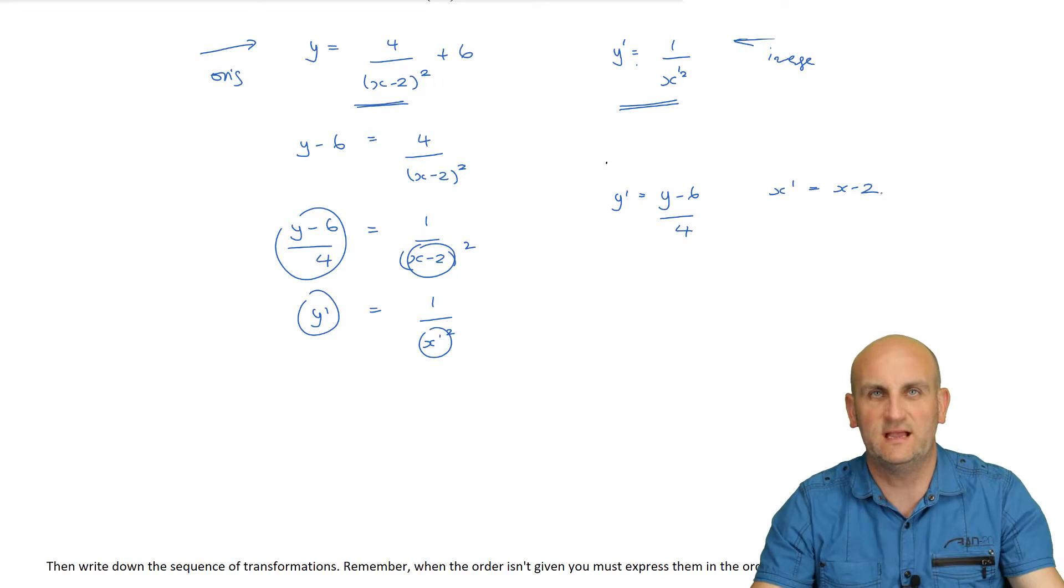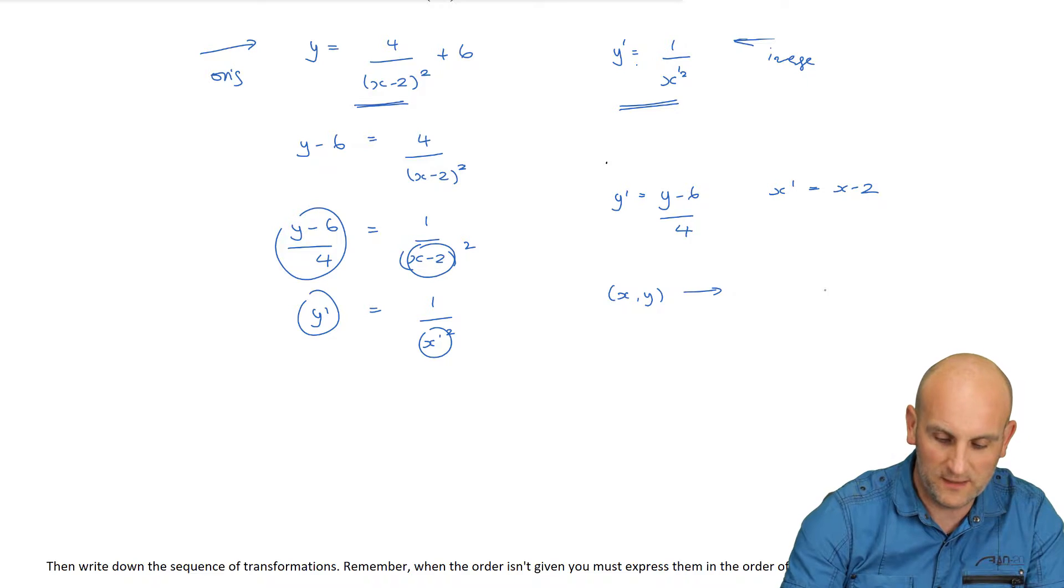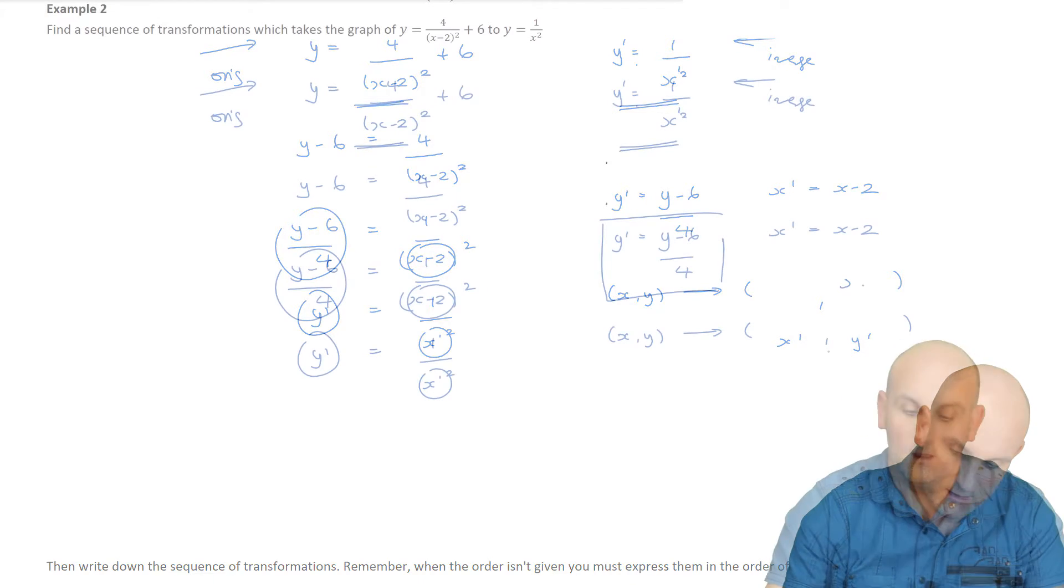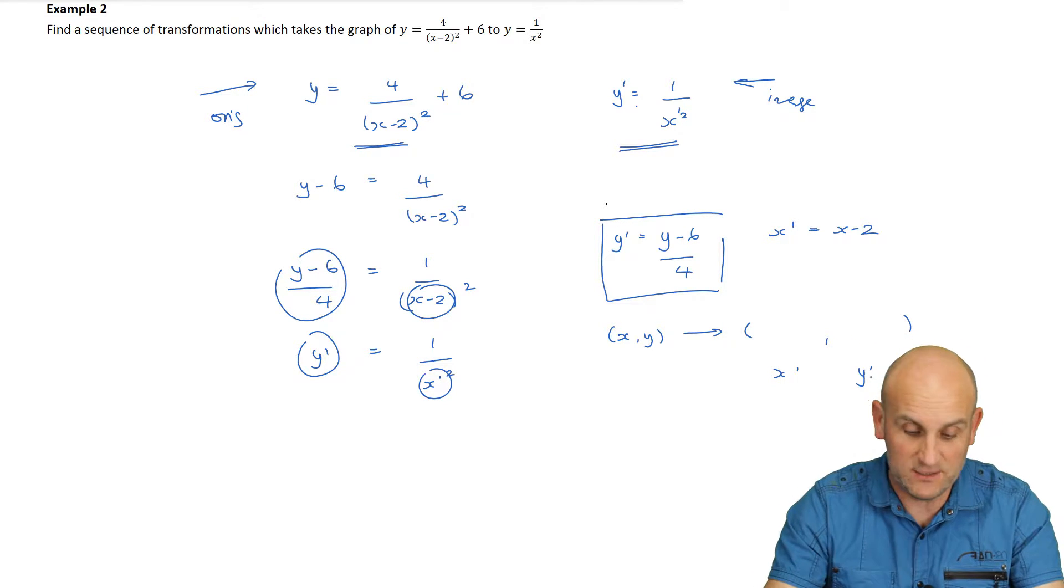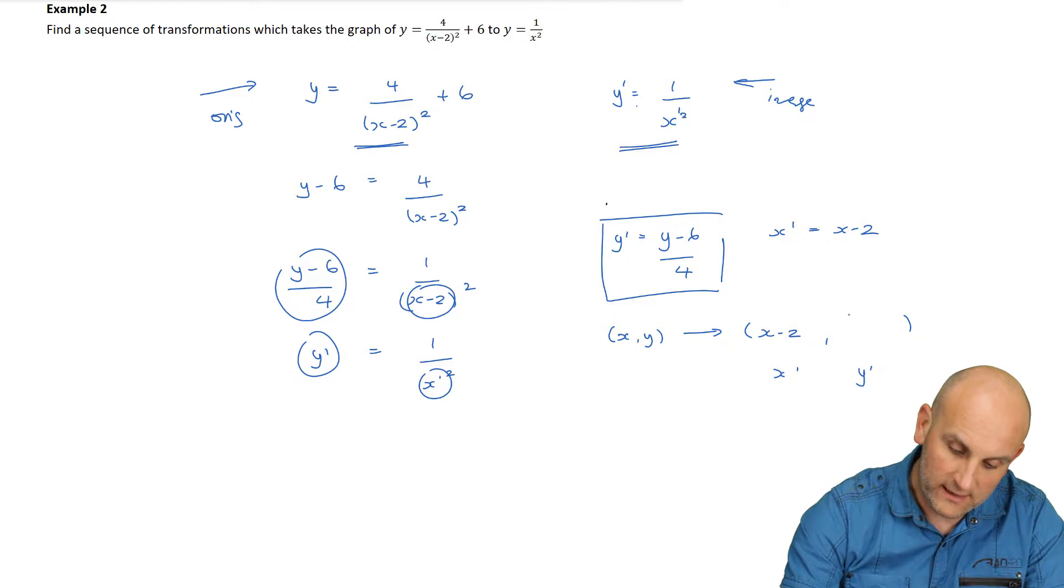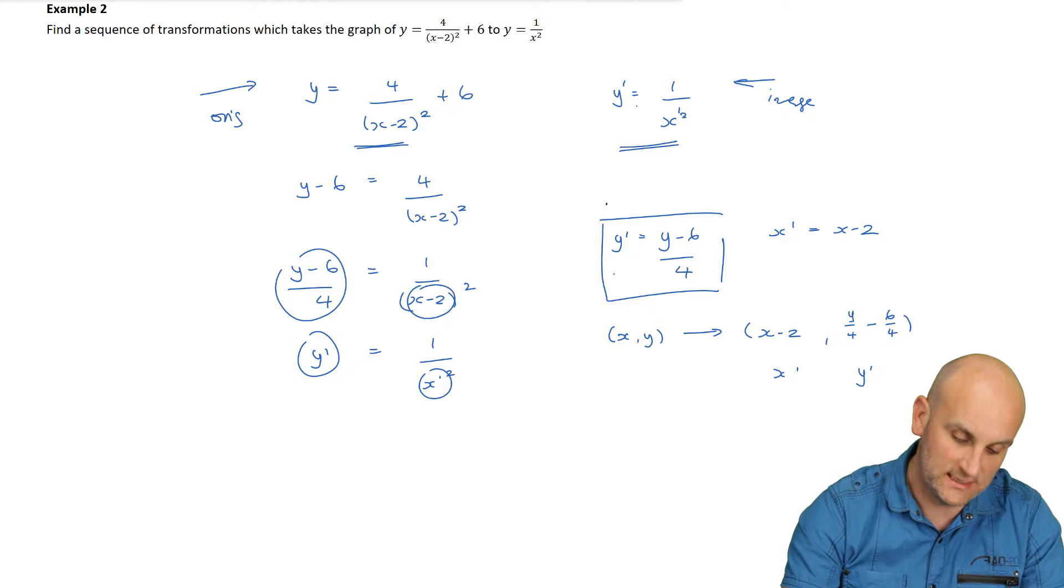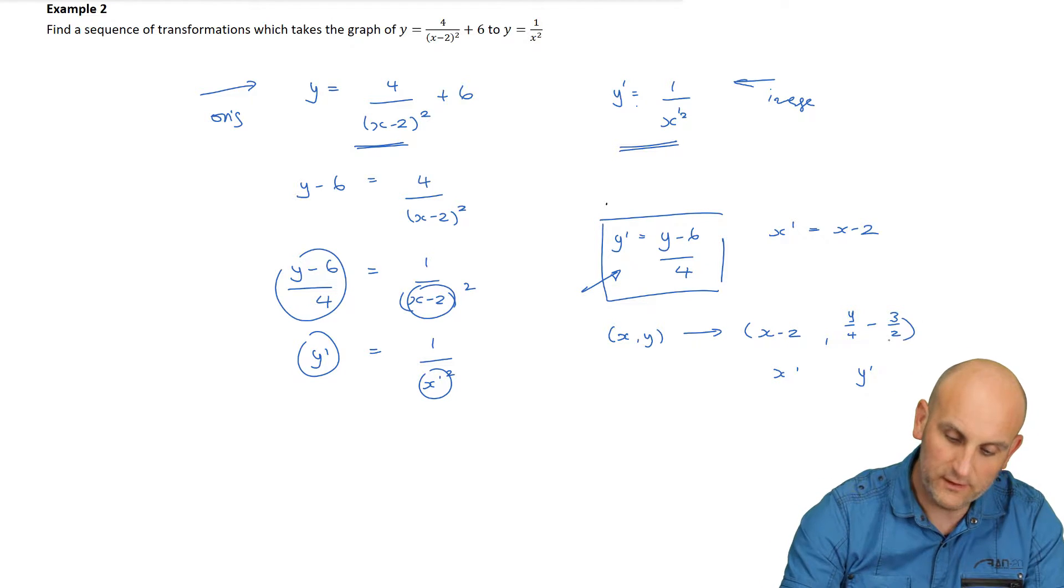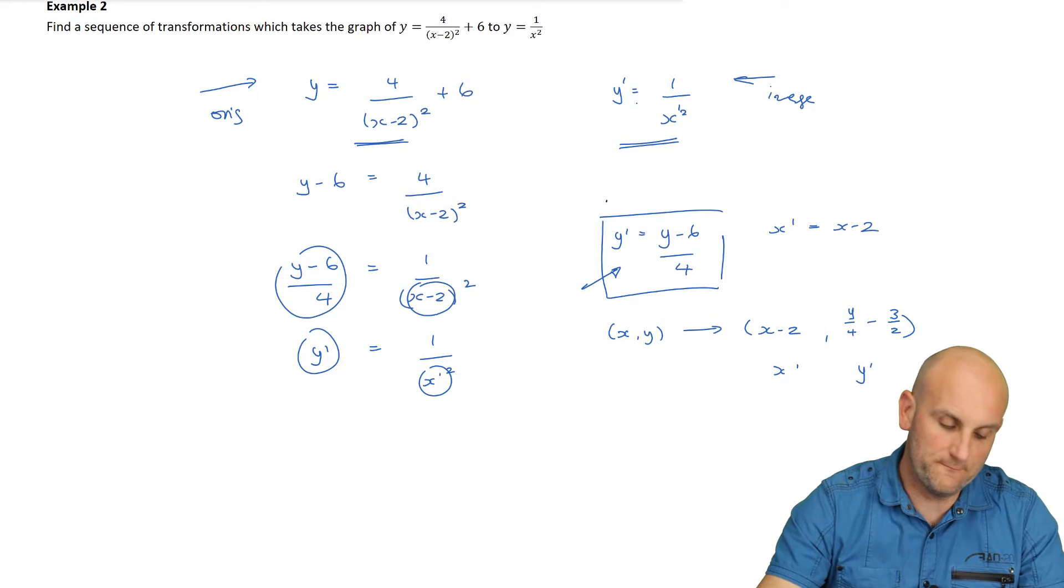Now, do we need to rearrange things here for x and y? No. Why is that the case? Because, ladies and gentlemen, if you remember, we had x, y was being mapped onto some sort of algebra that was equal to x' and y'. And we already have x' and y'. So that's equal to x' and y'. So all I need to do now is put these equations into that. I don't need to rearrange them. So x' was x - 2. And I'm going to rewrite this as y/4 - 6/4. Now, the reason we're doing this is because we have to make sure we do our dilations, followed by reflections, followed by translations. In the form you see here, not very helpful to us. And I'm going to make sure that 6/4 becomes 3/2. Because in methods, we need to make sure that we cancel down.